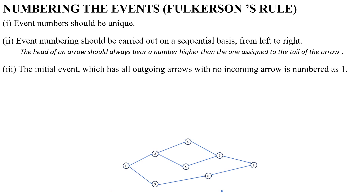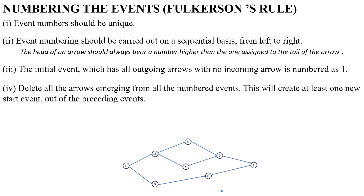Third rule is, the initial event which has all outgoing arrows with no incoming arrow is numbered as 1. So, you always have to give the number 1 to the starting event.